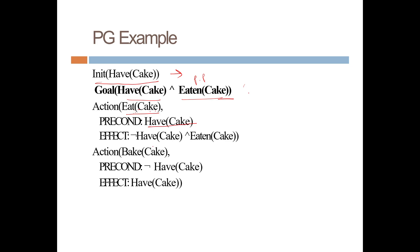The effect of the Eat Cake action is: Not having cake (I don't have cake because I have eaten it) and I have eaten the cake. So each action has preconditions and effects. After that, the action 'Bake Cake' — if you don't have cake, then bake it, and then you can have that cake. The precondition for Bake Cake is: Not having cake (negation operator). The effect is: I will have cake.